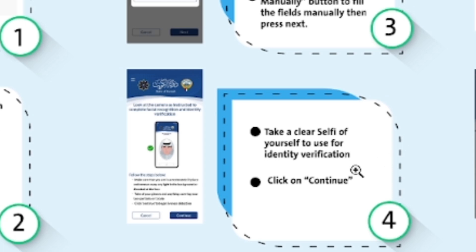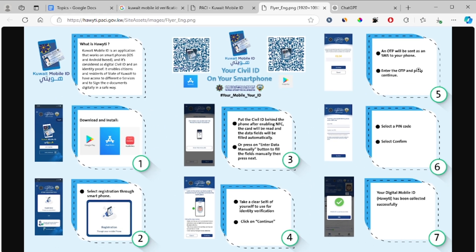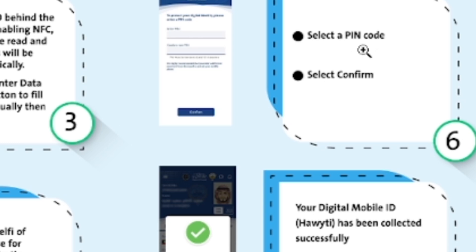After taking a selfie, click on continue. On the last step, an OTP will be sent as an SMS to your phone. Enter the OTP and press continue, then select a PIN code and confirm. Your digital Mobile ID will have been collected successfully.